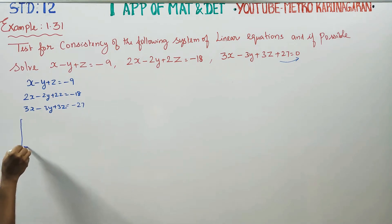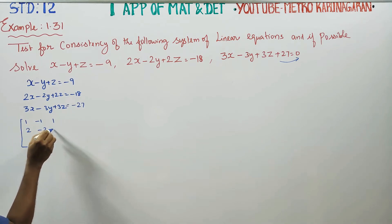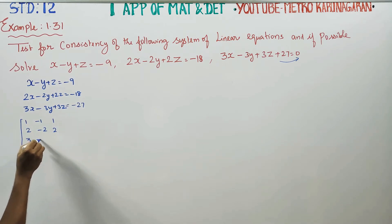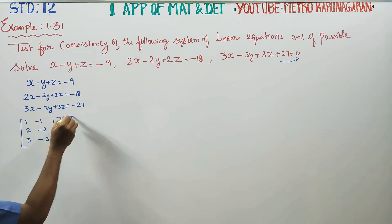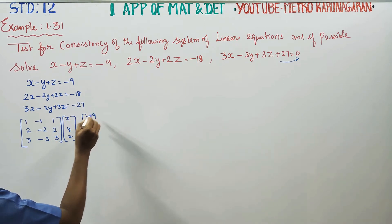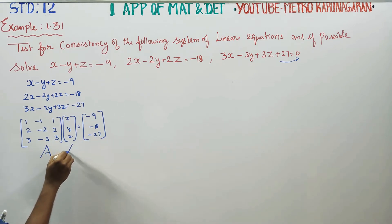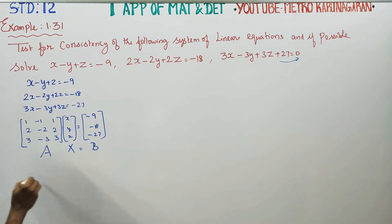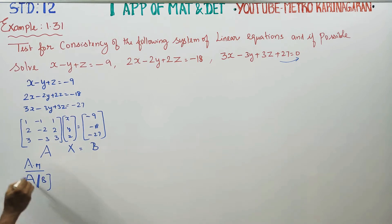In matrix form, the coefficient matrix A is [1, -1, 1; 2, -2, 2; 3, -3, 3], the variable matrix is [x, y, z], and the right-hand side B is [-9, -18, -27]. I am going to find the augmented matrix A|B.